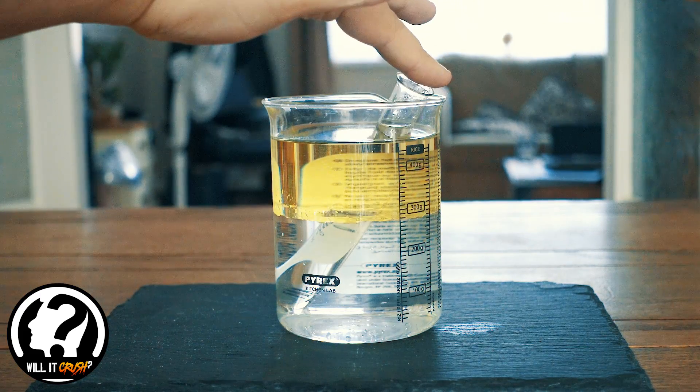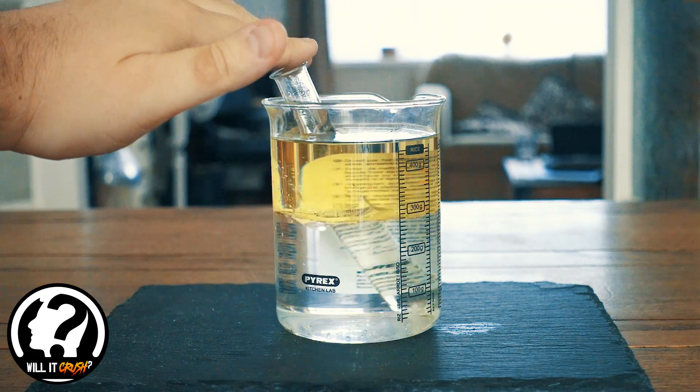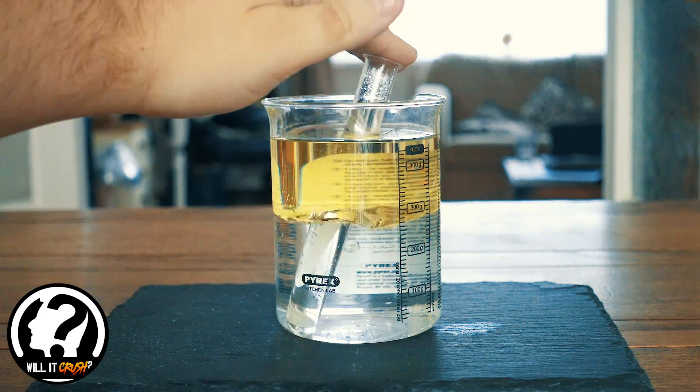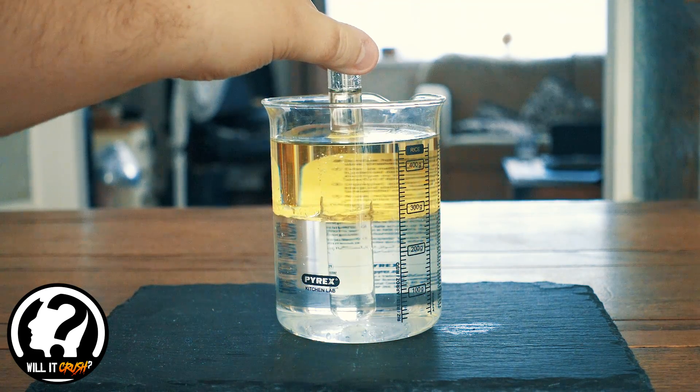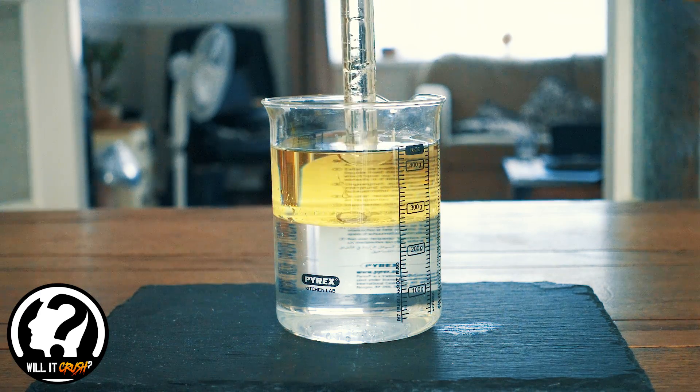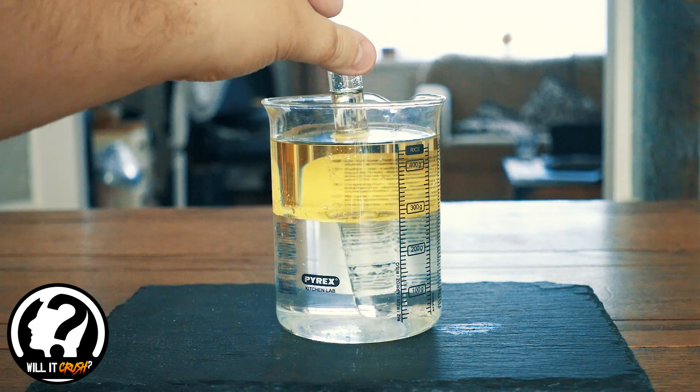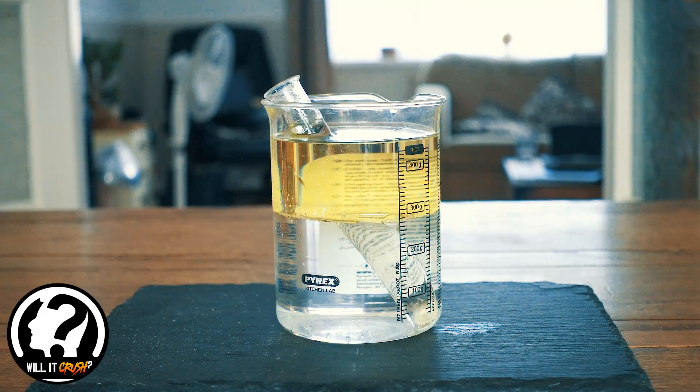I also half filled it with water this time, so that you can see you can definitely make out the tube at the bottom. But in the oil layer you can't see it, it's pretty much vanished. The only reason you can see the outline more than last time is because there's water clinging on to the outside of the tube.